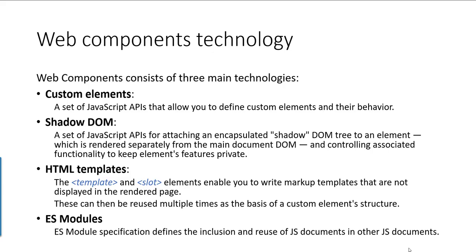For building web components, we need to understand primarily four core technologies. The first is a Custom Element — a JavaScript API that allows you to define elements and their behavior. You create a JavaScript class that defines all the functionality you want in your web component, and then use that class inside your HTML web pages.